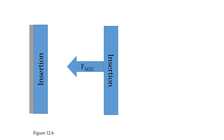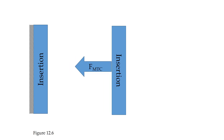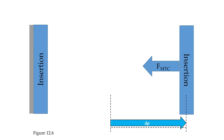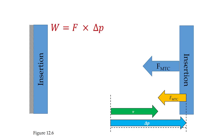In the second case, the MTC produces force, yields to any resistance, and one end moves further away from the other. In this case, the displacement is going from left to right, and if the displacement is going from left to right, then so is the velocity. But we already know the force is going from right to left. Because the force and displacement are in opposite directions, the work done by the MTC is negative, and therefore the power is also negative.